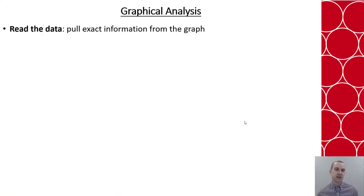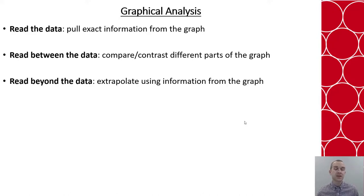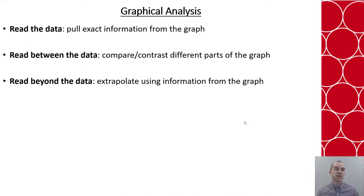Now let's talk about analysis. Most often, we look at three ways to do graphical analysis. First is to read the data — you're given a graph and pull exact information from it; that's the easiest type. The next type is to read between the data — some form of comparison or contrasting different parts of the graph, like how much more or less one group did, or how much it changed over time. The third type is to read beyond the data, where we're extrapolating information to understand a broader picture — making a prediction or understanding the larger population.